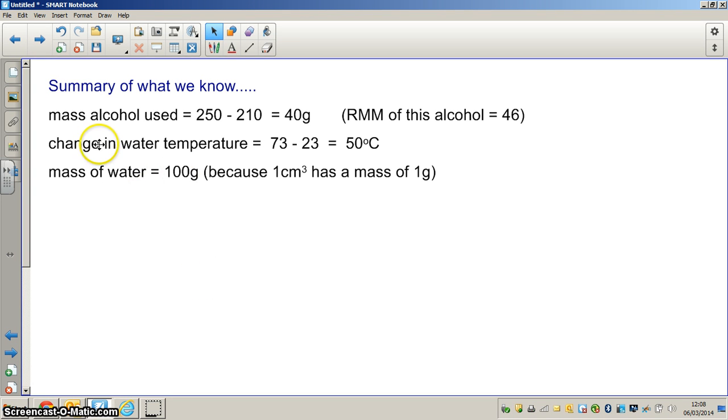This is what we know so far. We know the mass of alcohol used. We started with 250 grams, we have now got 210 grams, so we have actually used 40 grams of fuel, and on the bottle we find that the relative molecular mass of the alcohol is 46. The change in water temperature: we began at 23, we have ended at 73, and so the temperature change is 50 degrees centigrade. The mass of water: we have 100 centimeters cubed of water, and 100 centimeters cubed measures 100 grams because 1 centimeter cubed of water has a mass of 1 gram.